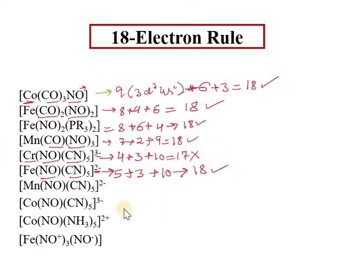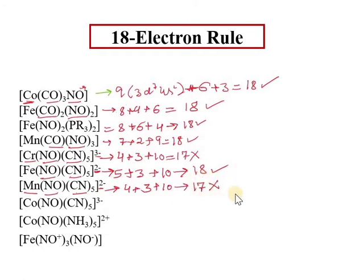For the Mn complex with a +3 charge, Mn has 7 valence electrons but only 4 remain. With 1 NO donating 3 electrons and 5 CN donating 10 electrons, the total is 17 — it does not follow the 18-electron rule. The EAN and 18-electron rules tell us which complexes are stable: those that follow these rules are more stable than those that do not.